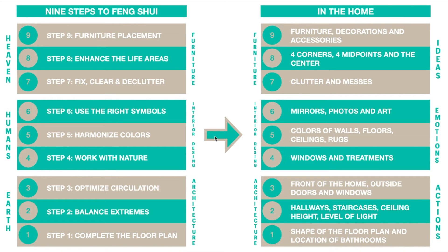Step 5: harmonize colors. Here is where we analyze the colors of walls, floors, ceilings, and rugs. Step 6: using the right symbols. This evaluates mirrors, photos, and art.